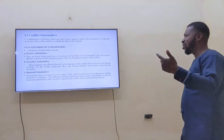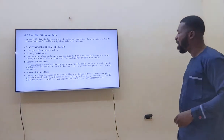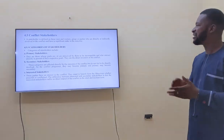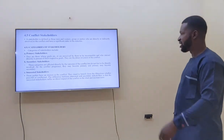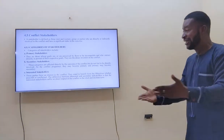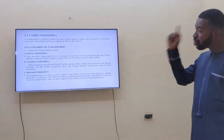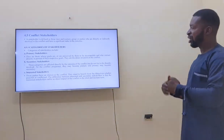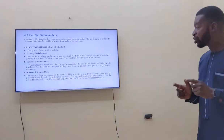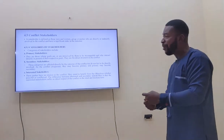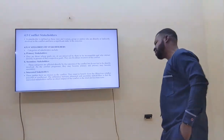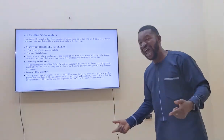Moving on to conflict stakeholders. A stakeholder is defined as a person, group, or party who is directly or indirectly involved in the conflict and has a significant stake in the outcome. The categories of stakeholders include primary stakeholders — those people directly involved in the conflict, meaning the outcome of the conflict directly affects them — and secondary stakeholders, who are indirectly involved but are still affected by the outcome. There are also interested stakeholders.